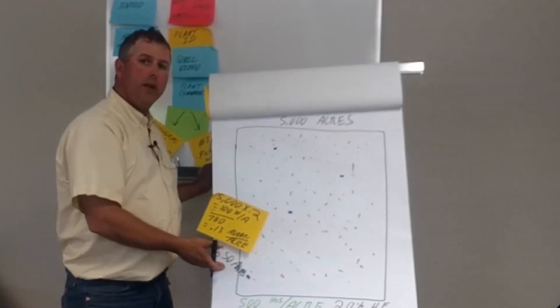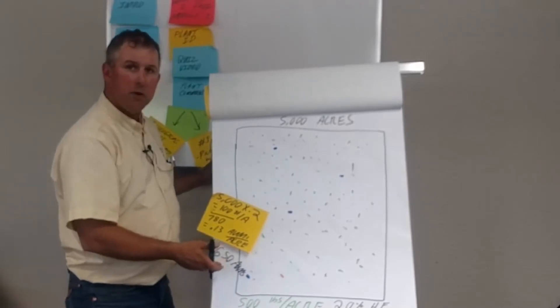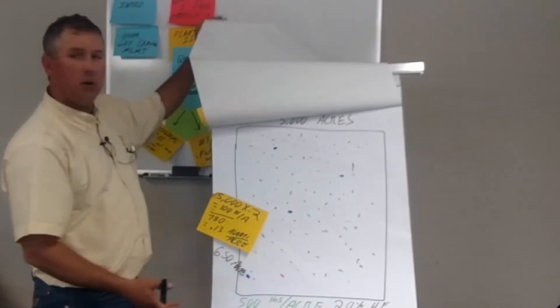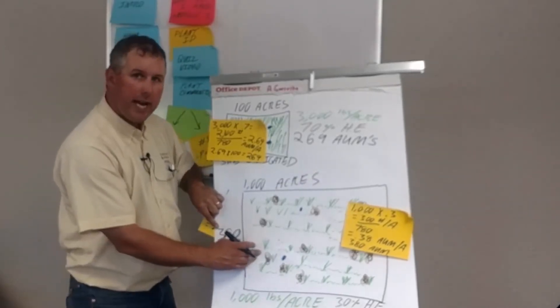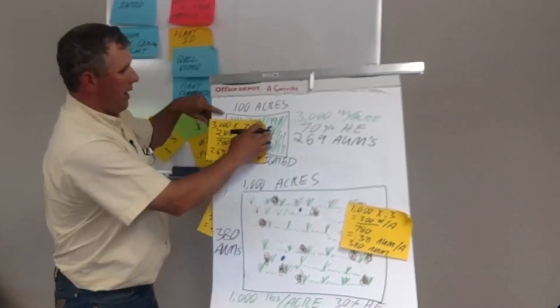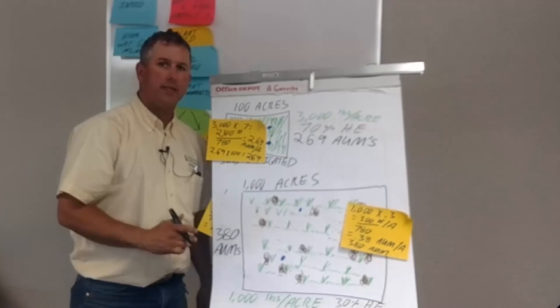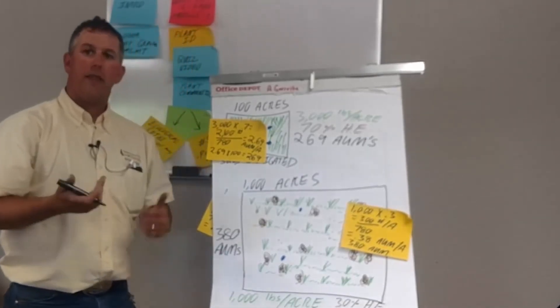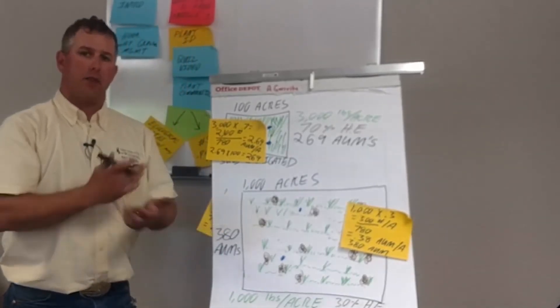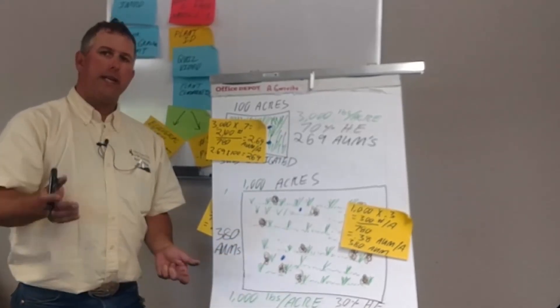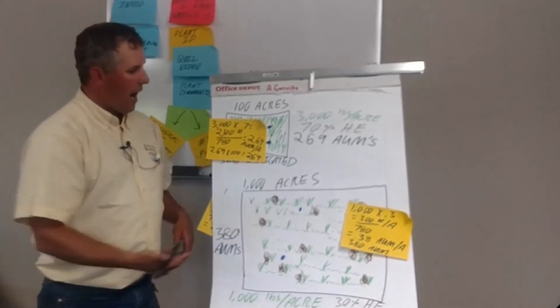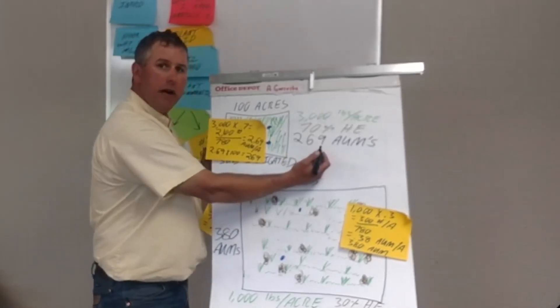Now we've just calculated forage supply. This pasture produces 650 AUMs, this pasture produces 380 AUMs, and this pasture produces 269 AUMs. That's our forage supply for the whole growing season, for all 12 months of the year. Now we need to overlay demand on that. How many cow-calf pairs could this run? For how long?